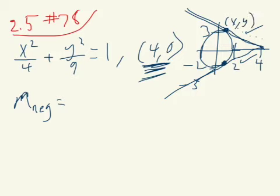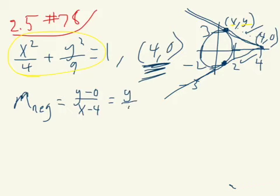Let's do the slope of the one up here. I guess I'll call it slope negative because this one here is going down. So we don't know what point this is, so we're going to have to call it x, y. And the reason that's a pretty good idea is because that x, y is on this ellipse equation.